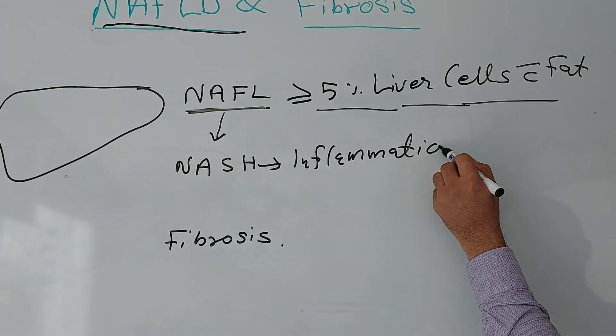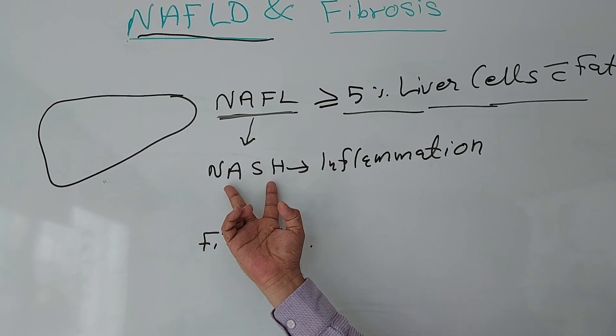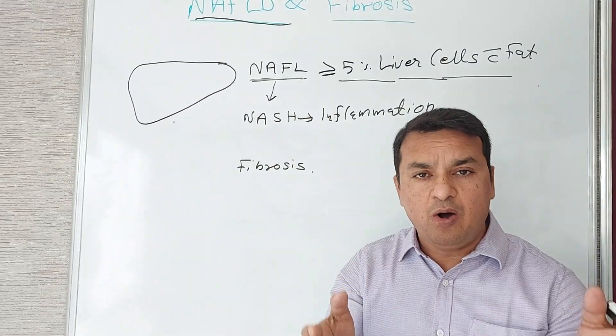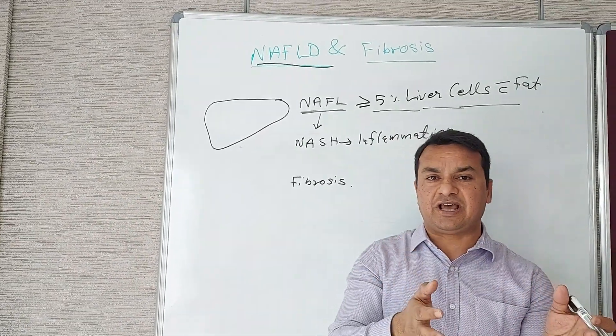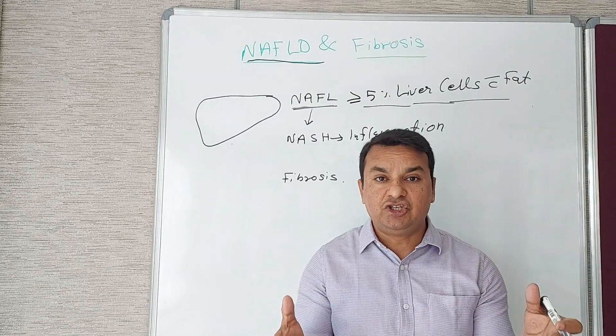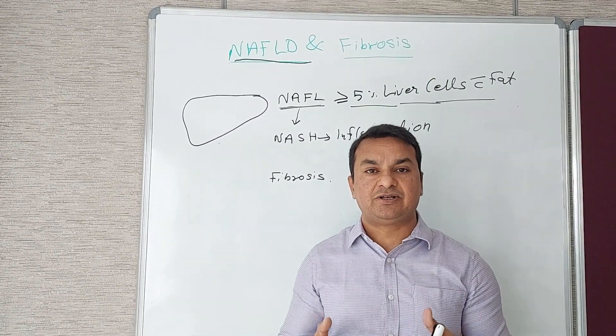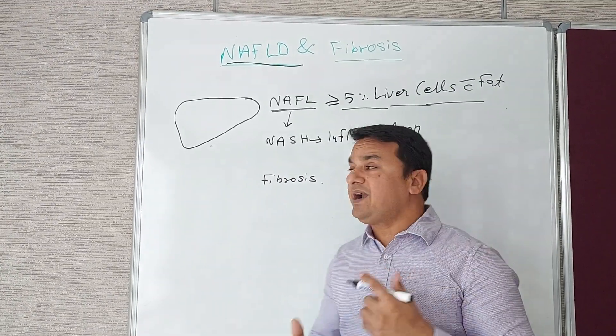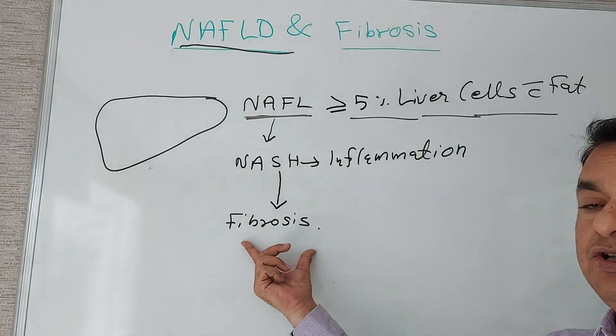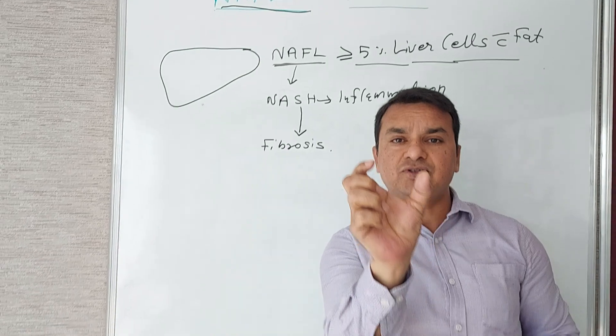Development of inflammation in liver is called non-alcoholic steatohepatitis (NASH). Long-standing inflammation in the liver cells ultimately leads to injury—ballooning of the hepatocytes—and the liver cells become damaged. This ultimately leads to development of fibrosis in the liver.